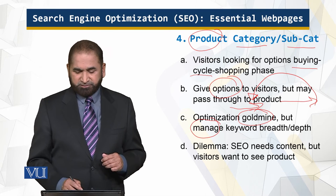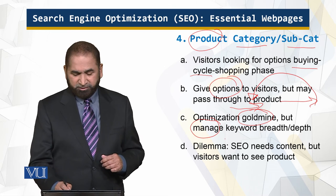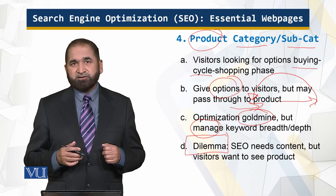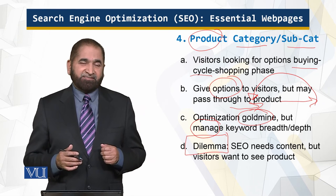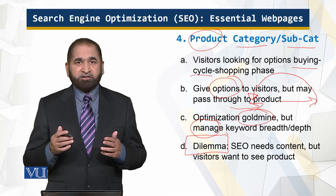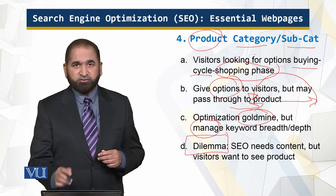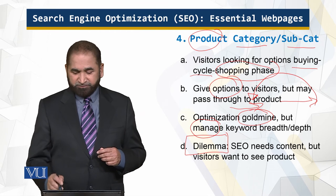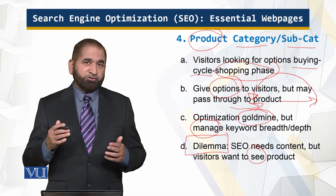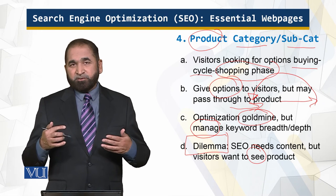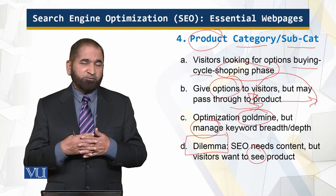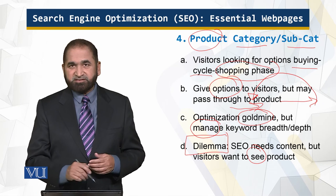The dilemma here is that for search engine optimization one needs content, and content comes from keywords. But visitors in the shopping phase are interested in seeing the product. So you have to merge what the search engine uses to optimize with what the visitors want — which is to see the product.